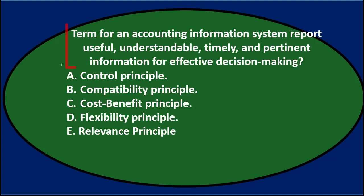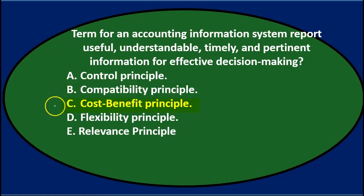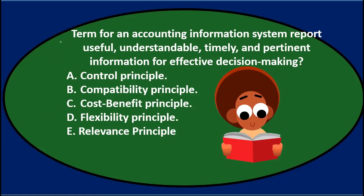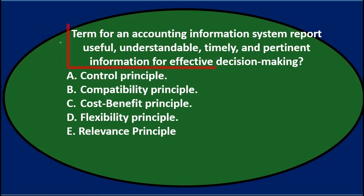Next question: the term for an accounting information system that reports useful, understandable, timely, and pertinent information for effective decision making is A, control principle; B, compatibility principle; C, cost-benefit principle; D, flexibility principle; or E, relevance principle. Let's go through it again — we're looking for a term for an accounting information system that reports useful, understandable, timely, and pertinent information for effective decision making.